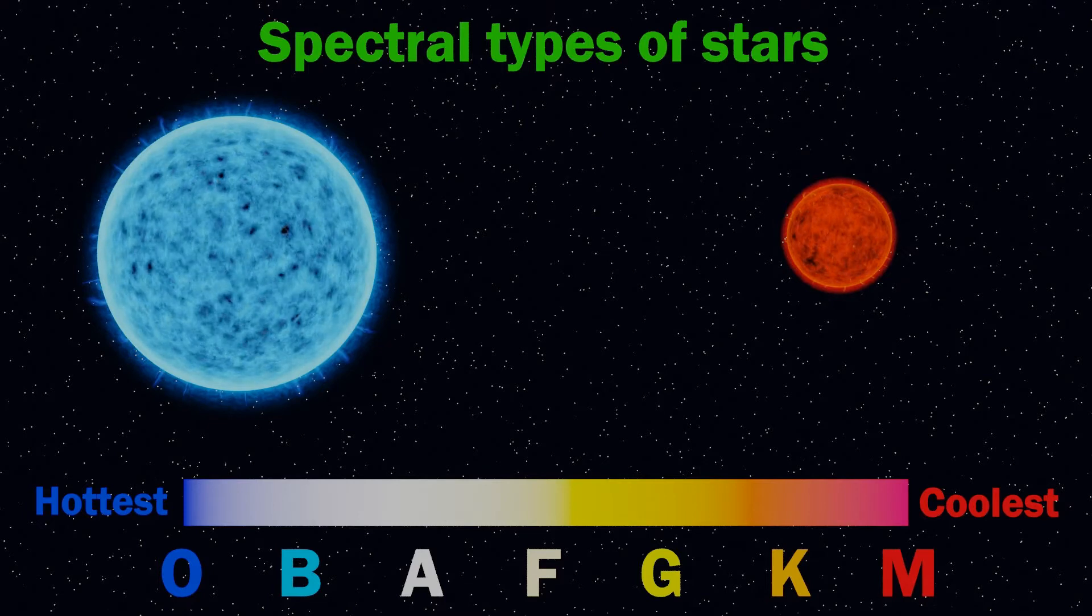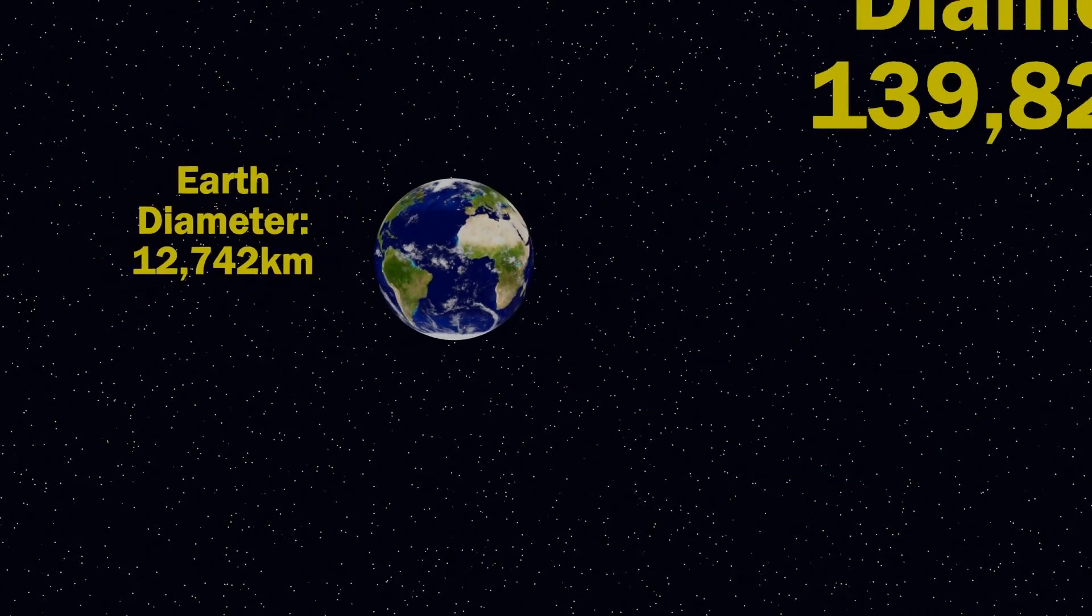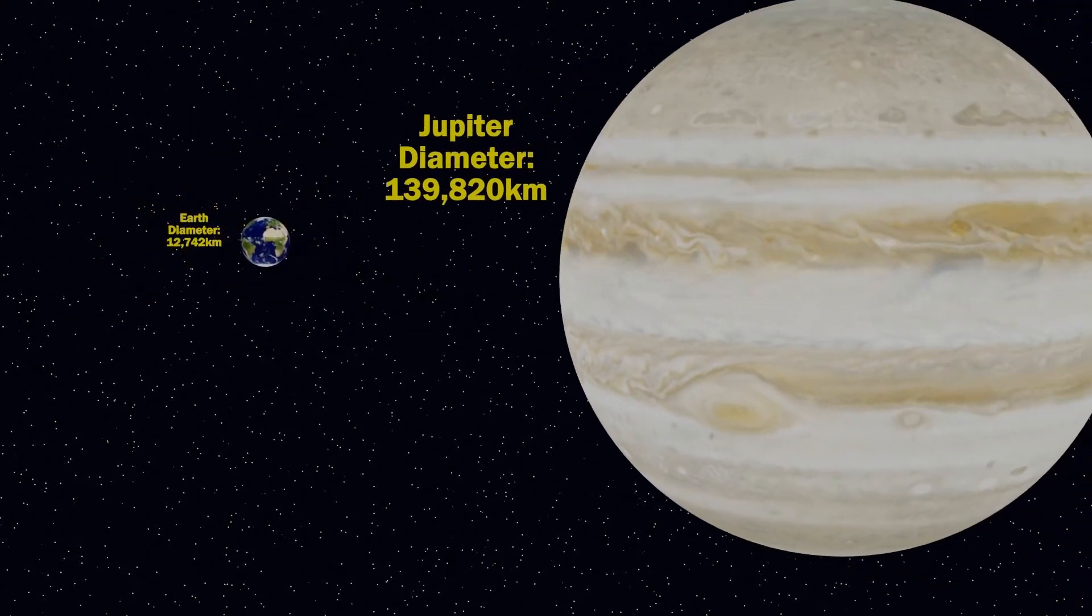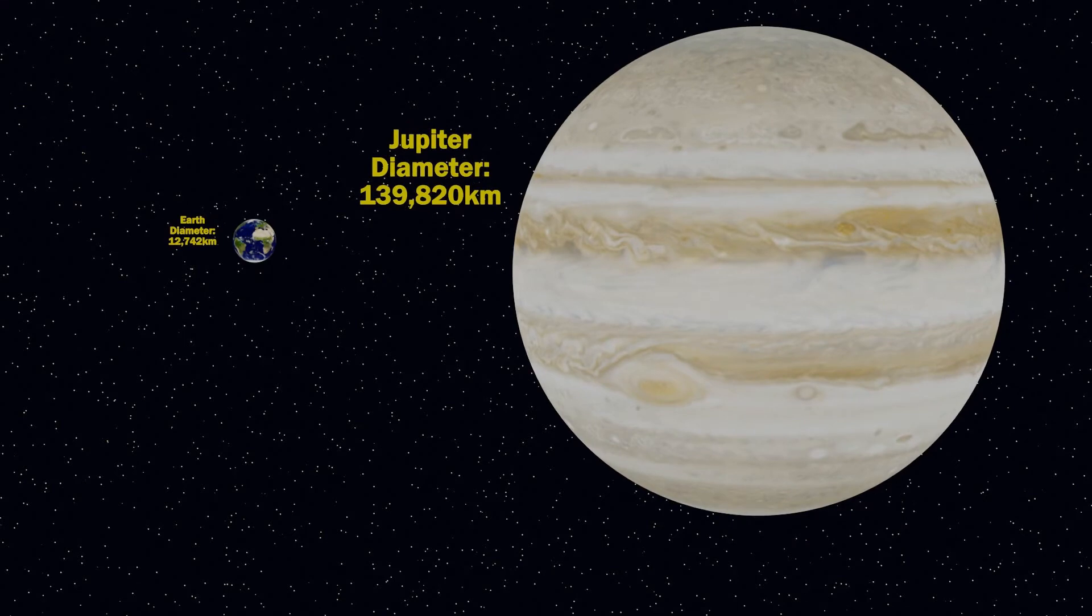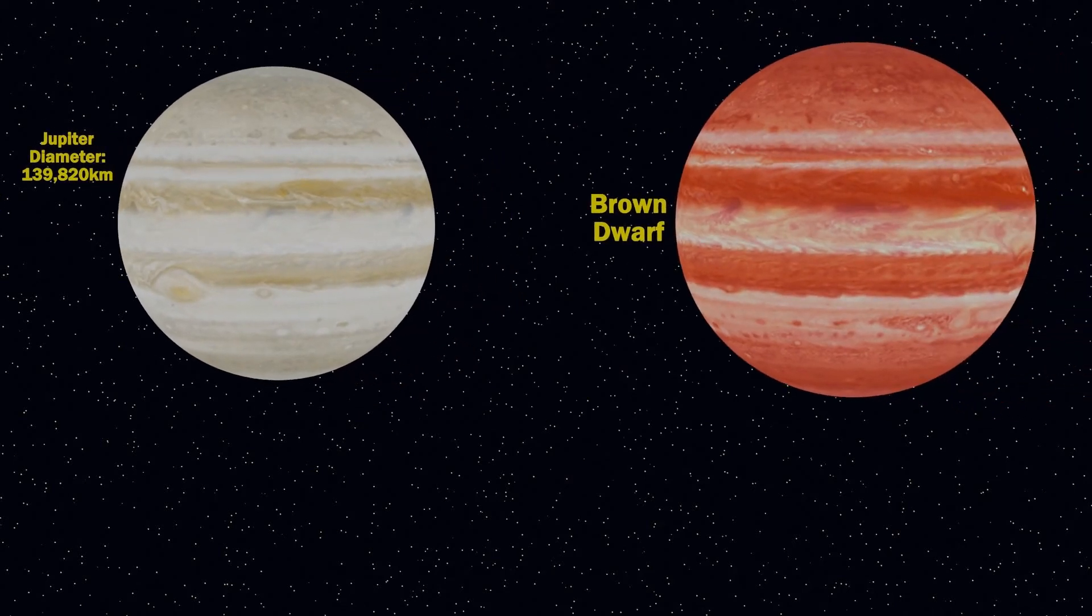So now back to brown dwarfs. A brown dwarf can range in mass from about 13 to 90 times the mass of the planet Jupiter, but they're all about the same size as Jupiter. This means that they're a lot more dense. They have a lot more matter in a space about the same size as Jupiter, and this makes them brown dwarfs.